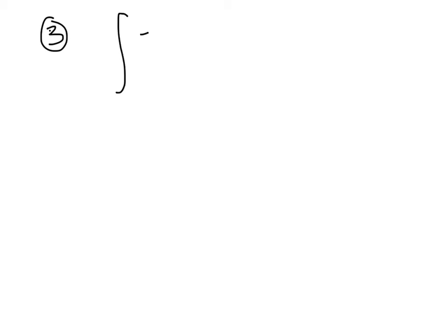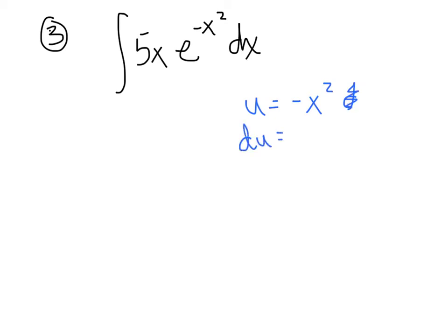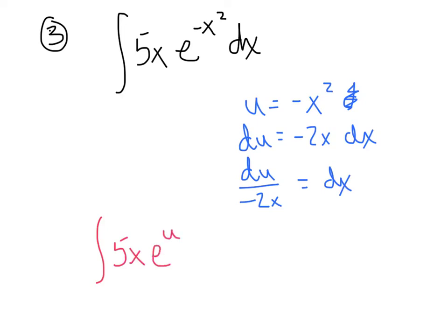Number 3 looks very similar: integrate 5x times e to the negative x squared power. We let u equal negative x squared. The derivative is negative 2x dx. After solving for dx and making substitutions, we still have e to the u for the exponential, and 5x is still in the expression. The good news is we are now able to cancel the x's, unlike the last problem.